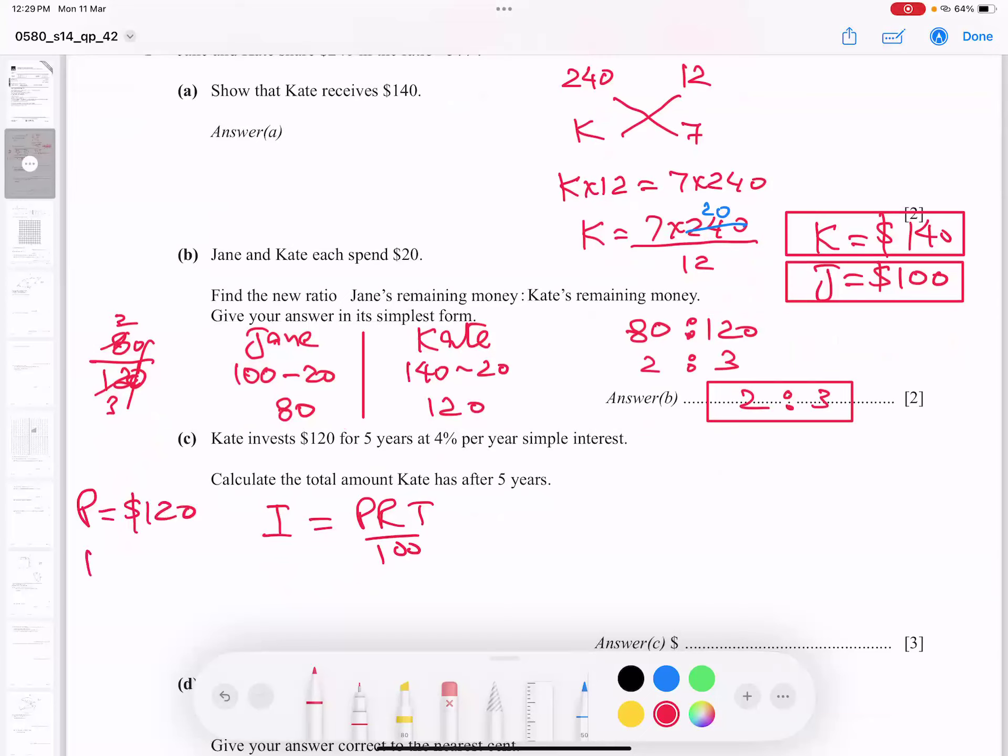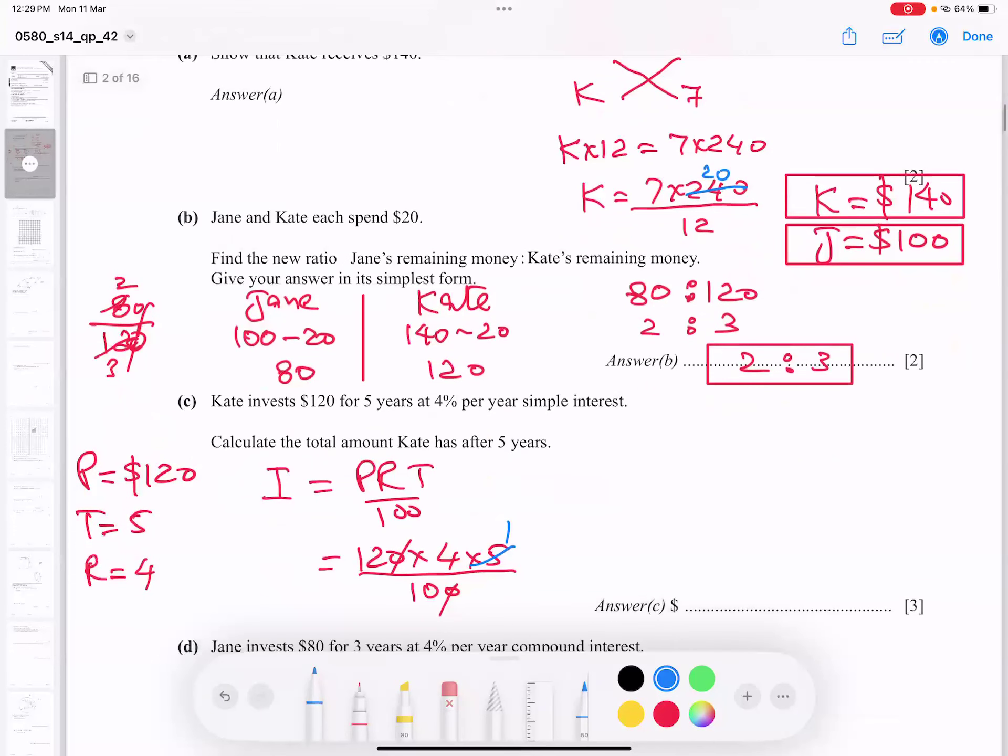Years, this stands for T, five years. Rate of interest is capital R, 4. And if I plug in the numbers, 120 into R, 4 into 5 by 100. Zeros cancel out. And five ones are, five twos are ten. And two ones are, two twos are. So answer is coming $24.